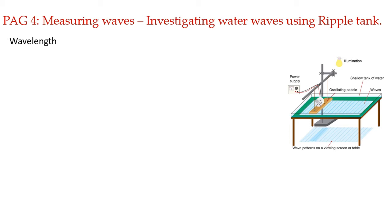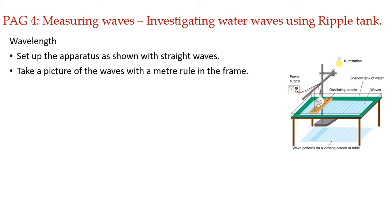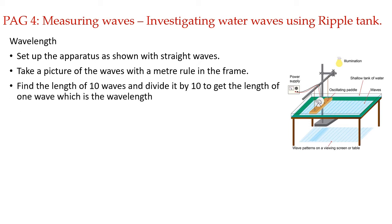Wavelength is the distance between similar points on two consecutive waves. These waves are very closely packed, so what we do is keep a ruler in the frame and take a picture of the waves. From the picture, we find the length of 10 waves and divide by 10 to get the wavelength of one wave. This improves accuracy, as measuring just two waves would give a very small distance with a lot of uncertainty.